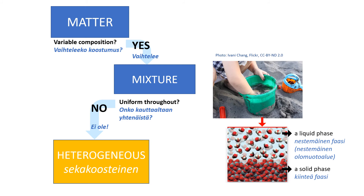A phase is any part of a sample that has a uniform composition and properties. By definition, a pure substance or a homogeneous mixture consists of a single phase. A heterogeneous mixture consists of two or more phases. When sand and water are combined, they do not mix evenly, but instead form two separate layers. Each of the layers is called a phase.